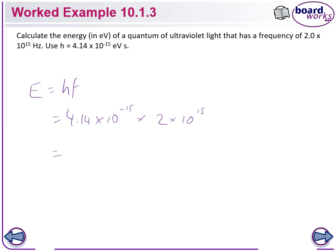What did we get last time? 8 point something, didn't we? It's 8.28. 8.3. That's exactly what we got last time. 8.3 electron volts.